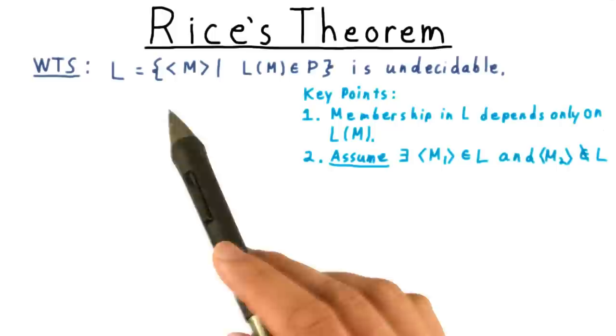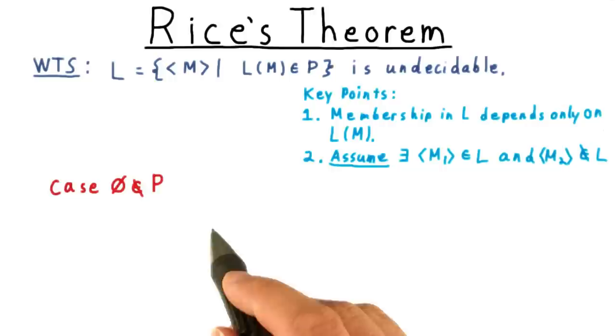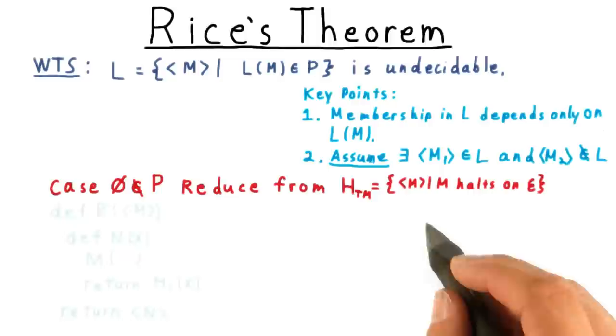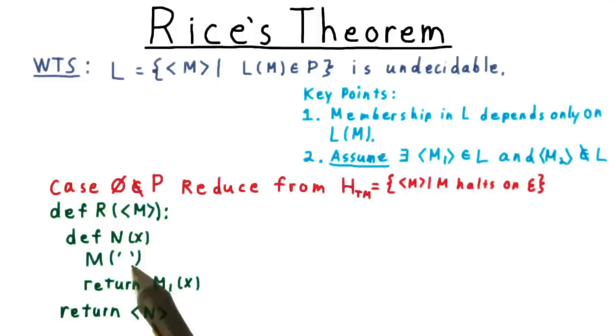Let's take a look at the case where the empty set is not in P first. In that case, we reduce from the halting problem. The reduction looks like this. N just runs M with the empty input, and if M halts, then we define N to act just like this machine M1, which is in the language.